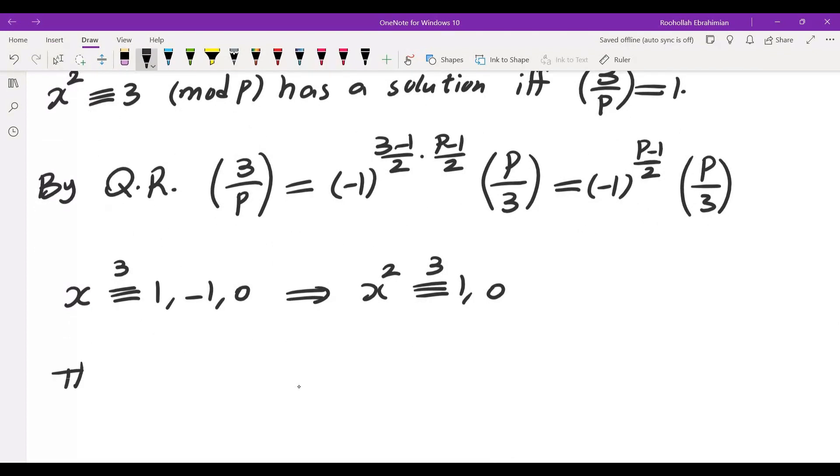So that tells us P over 3 is 1 if P is 1 mod 3. And it is negative 1 if P is negative 1 mod 3. Because the only quadratic residues mod 3 are 1 and 0. P cannot be 0 mod 3 because P is more than 3. Therefore, P has to be 1.